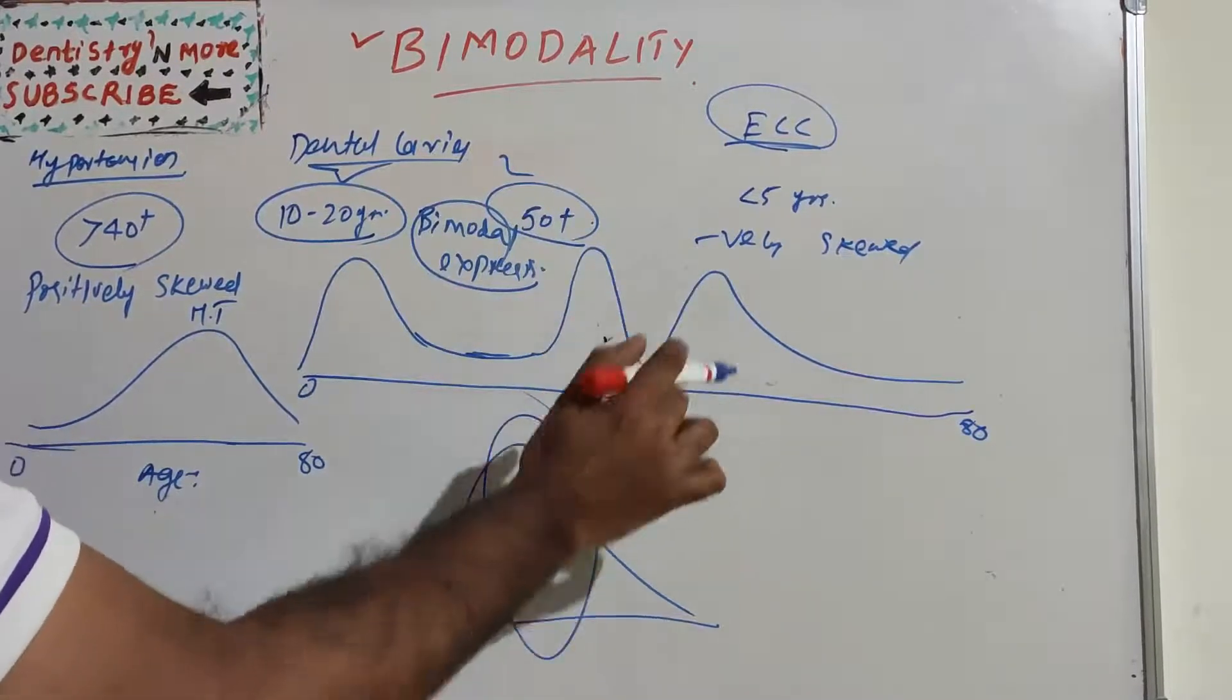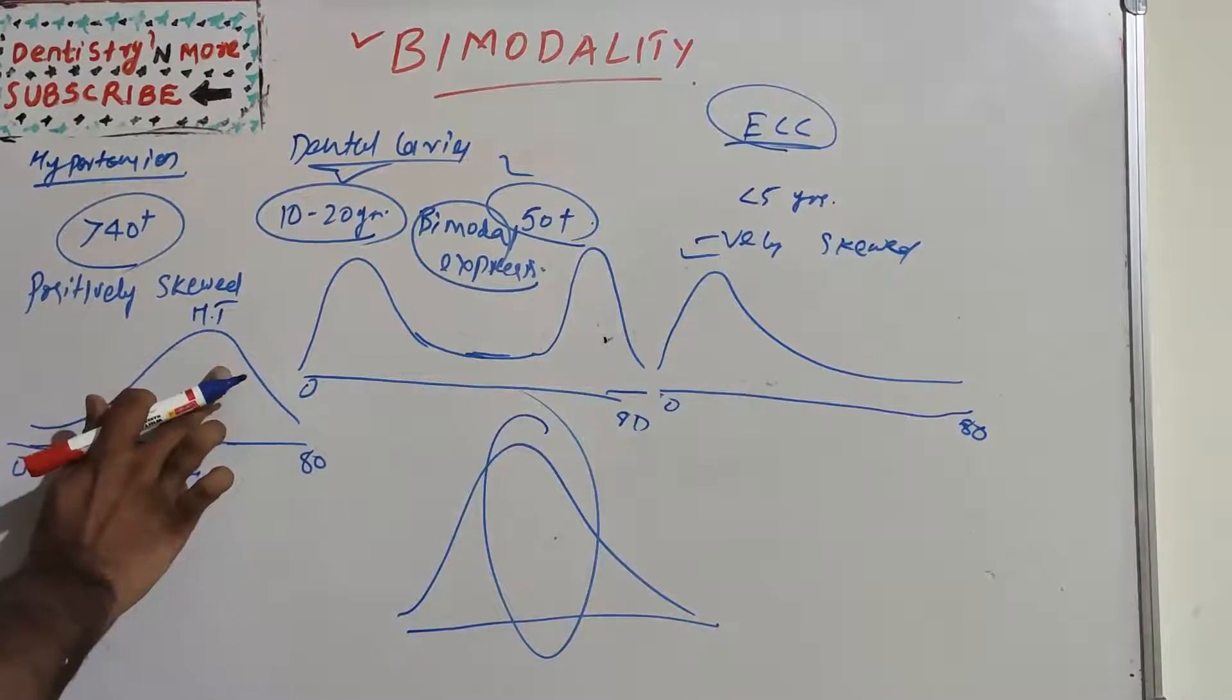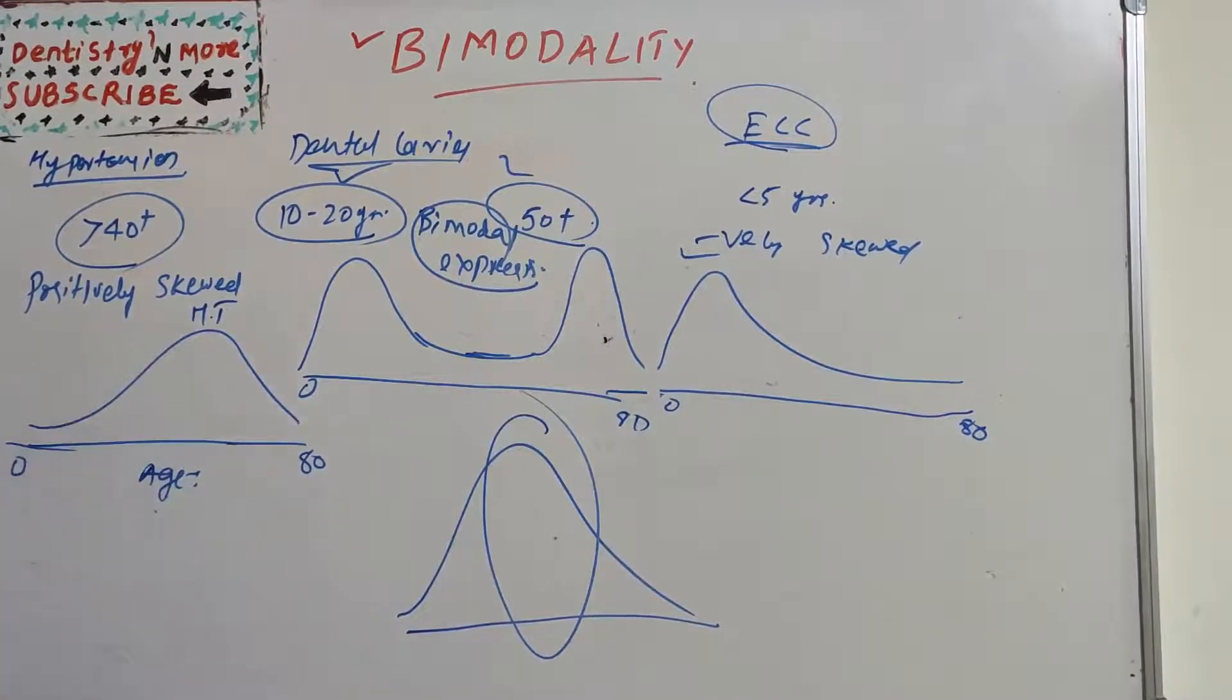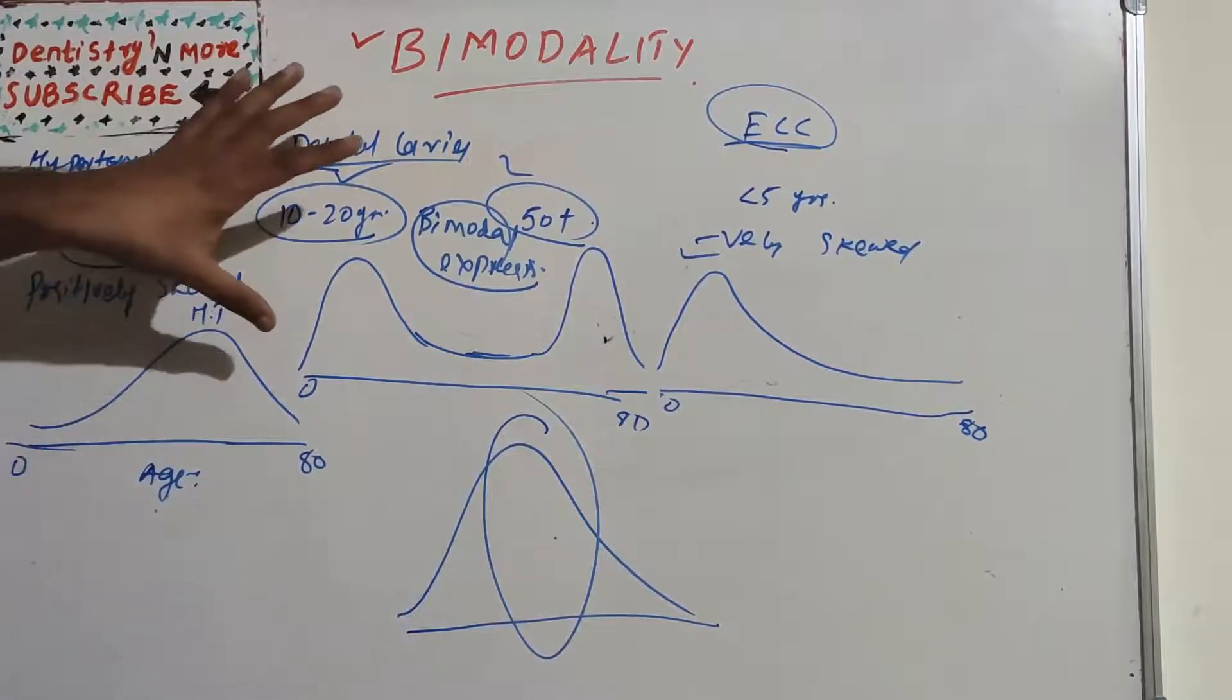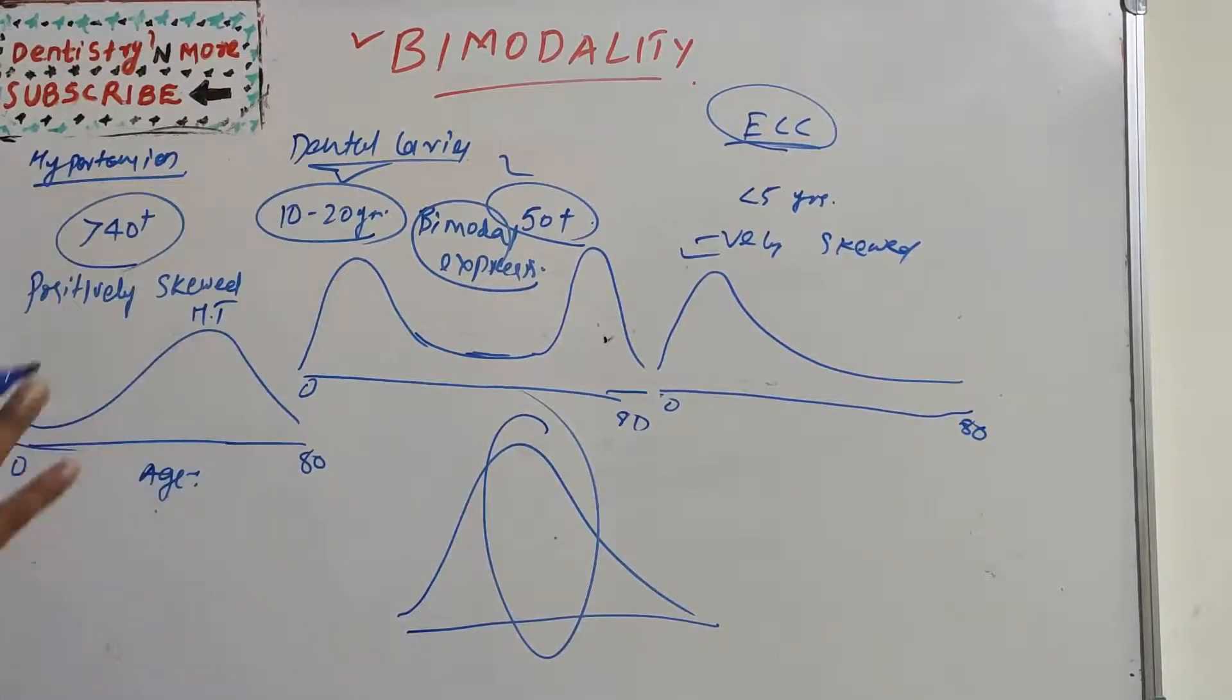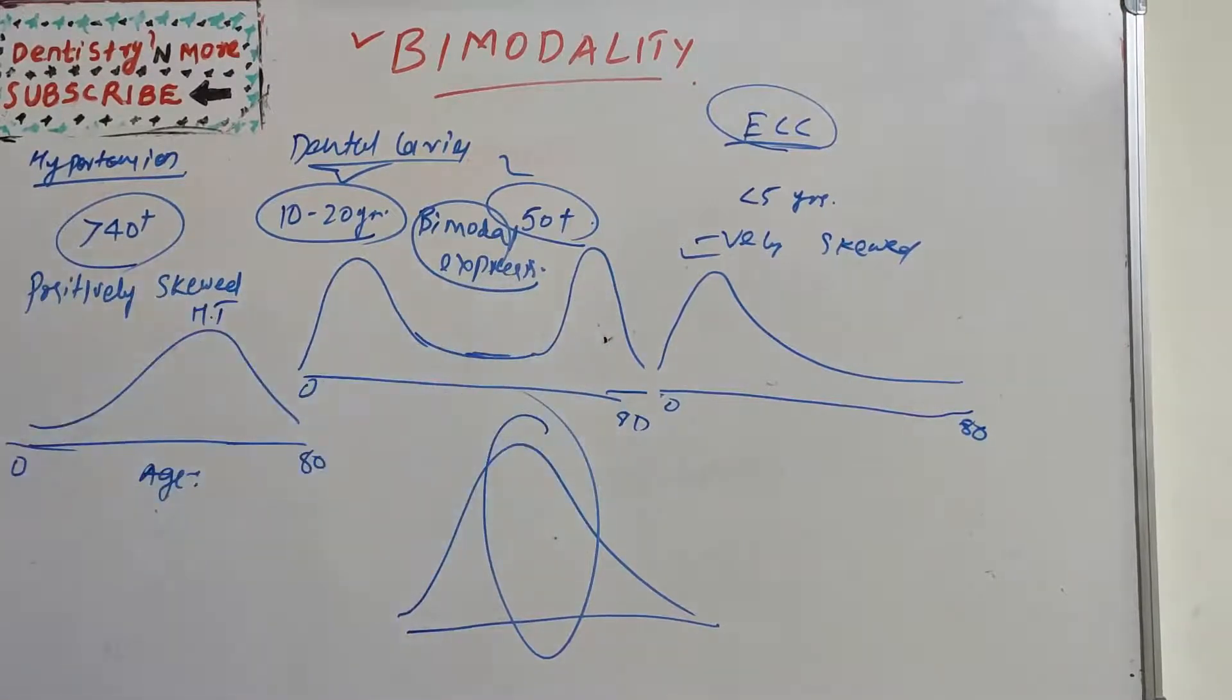So it has bimodal expression because it is expressed in two modes. This is expressed in one mode but negatively skewed. This is expressed in one mode, positively skewed. Skewness on normal curve is not directly related to bimodal expression. That peculiar representation of the data in two peaks is known as bimodal expression or bimodality.